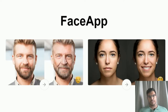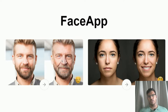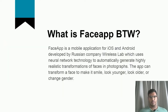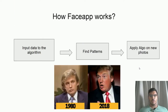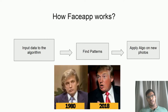As you can see on screen, this is the present version of a man, and the app converts how he will look when he gets old. Similarly, this is the normal face and this is the face with the smile. So how does this app work?